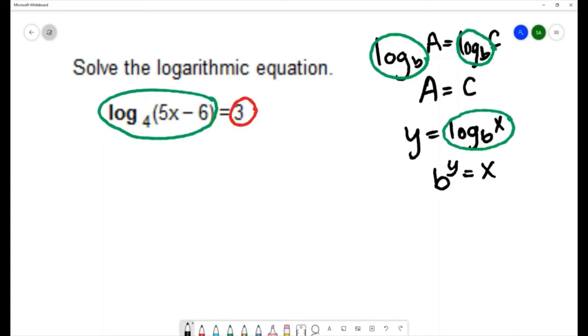So let's convert this log equation to an exponential. It has a base of four, so the base of the exponent will be four. The log always equals the exponent, so we'll have an exponent of three. And this expression is going to equal the expression inside of the log.